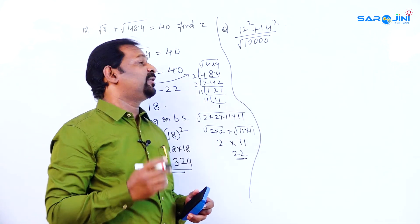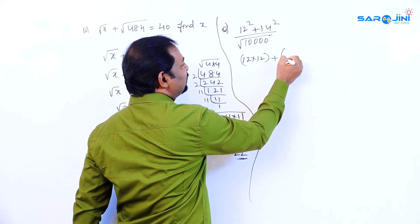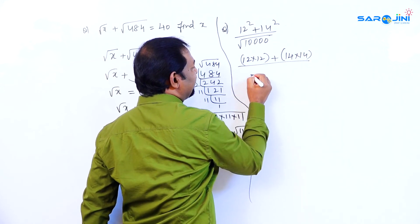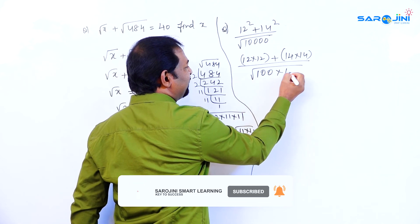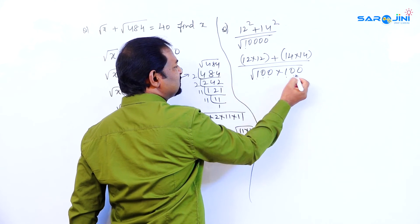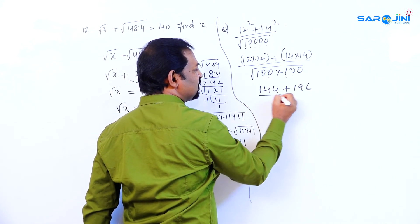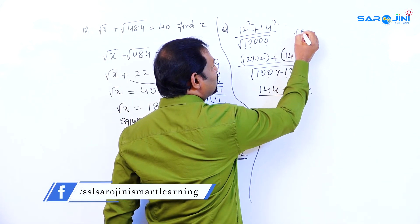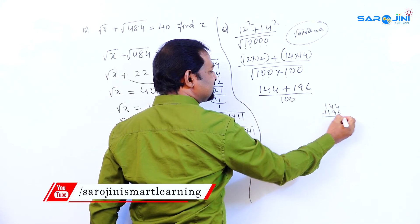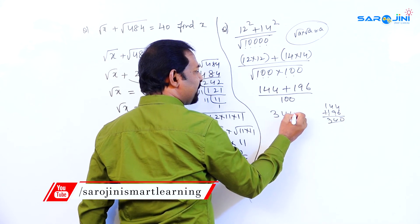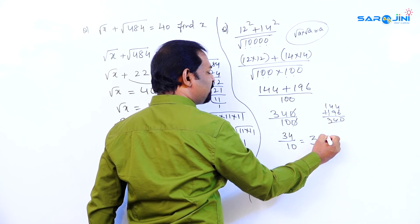Another question: root 144 plus root 196, all divided by root 10000. Root 144 is 12, since 12 into 12 is 144. Root 196 is 14, since 14 into 14 is 196. Root 10000 is 100, since 100 into 100 is 10000. So the expression becomes 144 plus 196, all divided by 100. That gives 340 divided by 100. The zeros cancel giving 34/10, which equals 3.4 as the final answer.